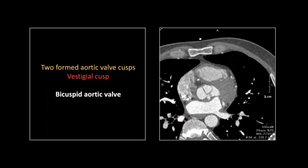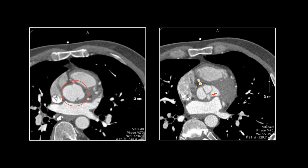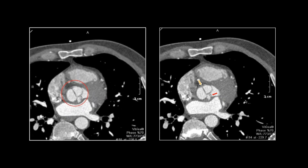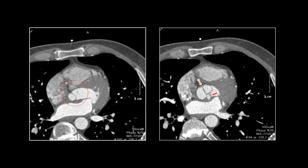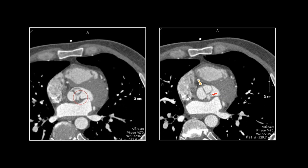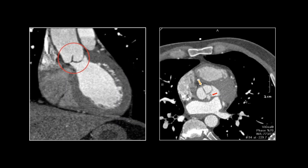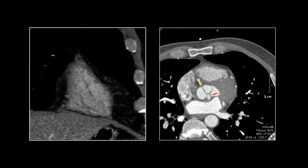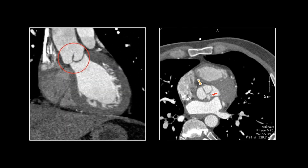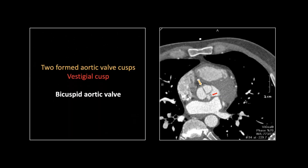Our next valve case is a bicuspid valve. You can see there are two normally formed aortic valve cusps and then there's this one little vestige here. On these gated studies you can often pick this up in bicuspid valves — there will be just this tiny little smidgen of vestigial cusp instead of complete absence. So there are the two normal cusps, and then there's that one posterior vestige. That is a bicuspid valve, which can be associated with a number of other abnormalities, probably most commonly coarctation.